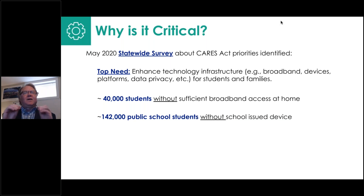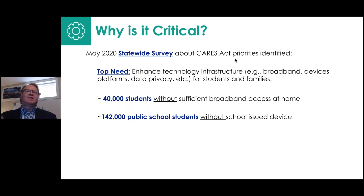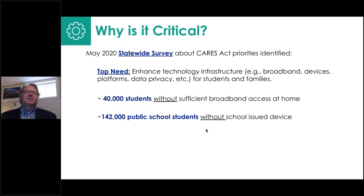Broadband access, devices, and related technology for students and families became a critical priority. Prior to the pandemic, data sets identified that roughly 40,000 students in Nebraska were without sufficient broadband access at home. We also knew from future ready profiles submitted by districts that roughly 142,000 students in public schools were without a school-issued device — big challenges even before the pandemic.